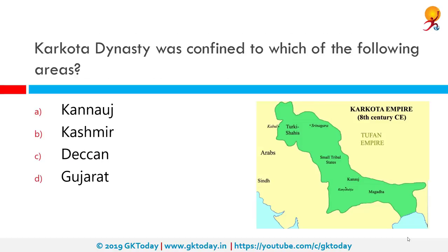The Karkota dynasty was confined to which area? The correct answer is Kashmir. The Karkota Empire was a Kashmiri dynasty that was a major power in the Indian subcontinent during the 7th and 8th centuries. It was founded by Durlabhavardhana during the lifetime of Harsha Vardhana. The dynasty marks the rise of Kashmir as a power in northern India.